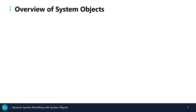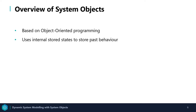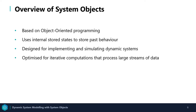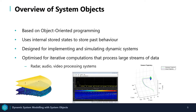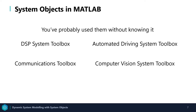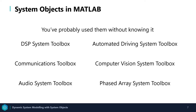Let me give you an overview of system objects. They're based on an object-oriented programming approach and they use internal stored states to store past behavior. This means that they're designed for implementing and simulating dynamic systems. They're also optimized for iterative computations that process large data streams, for example in radar, audio, or video processing systems. Now you've probably used system objects without even knowing it — if you've used the DSP System Toolbox, Computer Vision System Toolbox, or Phased Array toolbox, just to name a few, as these components are fundamental to those toolboxes.